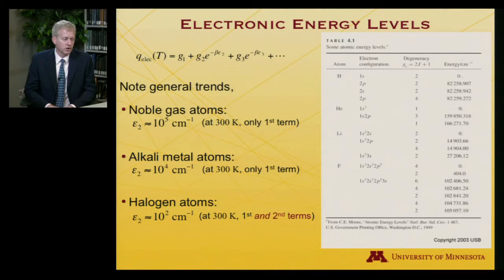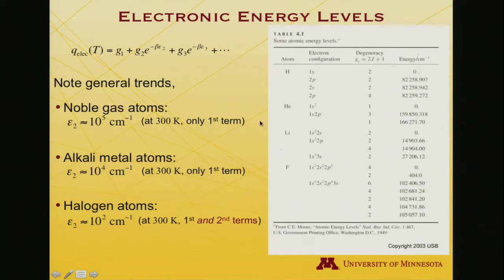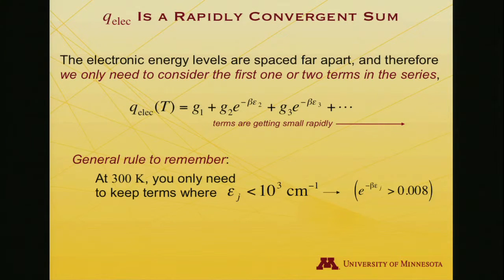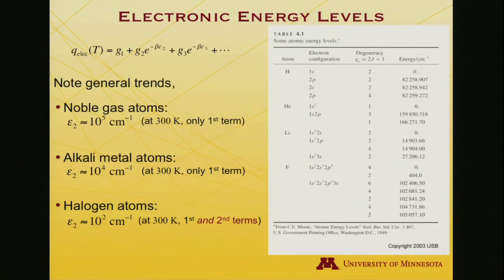And so if we look at actual electronic energy levels, and here's a table for a few gases, and we looked at some of these in actually the very first week, tabulated are hydrogen, and helium, and lithium, and fluorine. And what you generally find is, there's some trends here. If you look at the noble gas atoms, so here's helium, that's a noble gas. Its first excited state is a hundred and sixty thousand wave numbers above the ground state. So I said at room temperature, you only needed to go up about a thousand wave numbers. But here, it's a hundred thousand plus wave numbers. So that first excited state makes no contribution whatsoever.